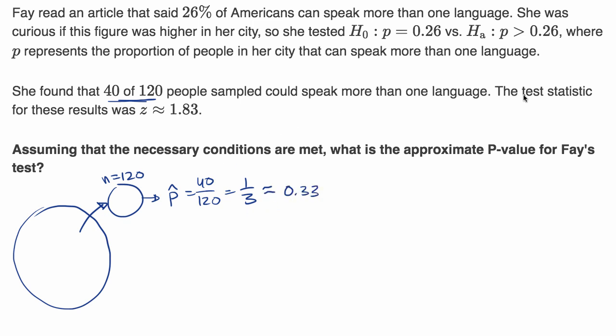And then she calculates the test statistic for these results was z ≈ 1.83. We do this in other videos, but just as a reminder of how she gets this, she's really trying to say, well, how many standard deviations above the assumed proportion? Remember, when we're doing the significance test, we're assuming that the null hypothesis is true.